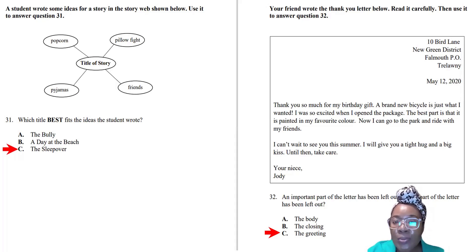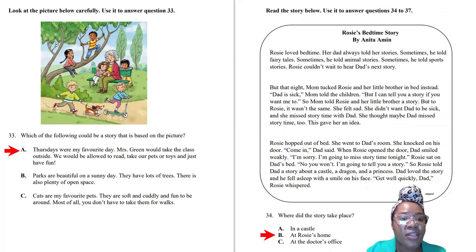Let's look at this letter to answer question thirty-two. We see the address, date, body of the letter, closing, and name, but something's missing: the greeting. There's no 'Dear Auntie,' even though at the end it says 'your niece Jody.' The greeting is missing, and it's a very important part. Question thirty-three: Look at the picture and figure out what the story would be about. We have a lady in a park with children around her. The answer is A: 'Thursdays are my favorite day. Mrs. Green would take the class outside.'